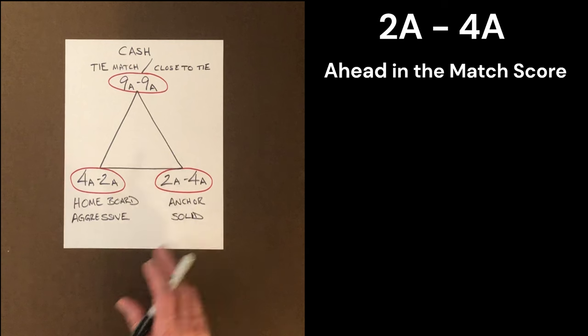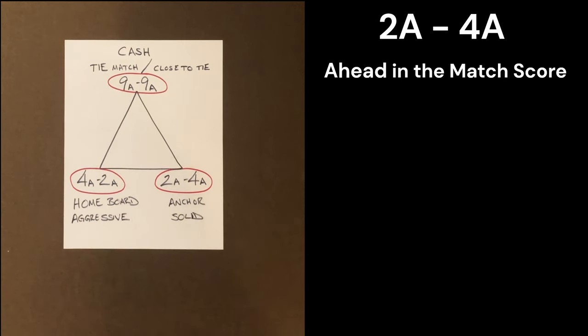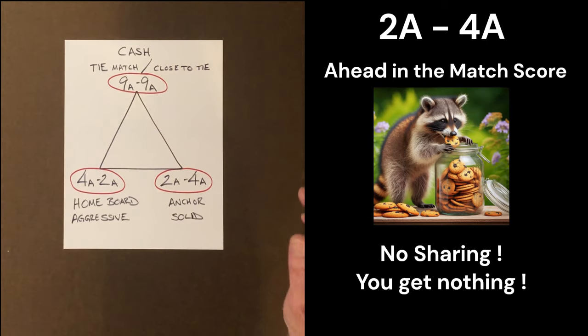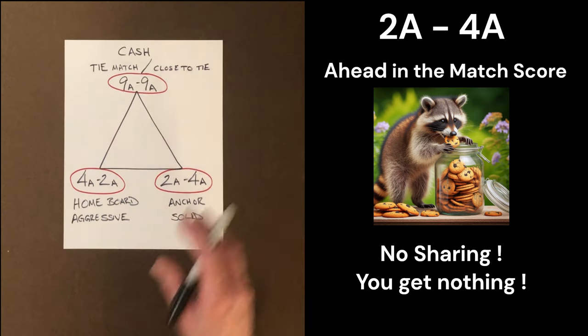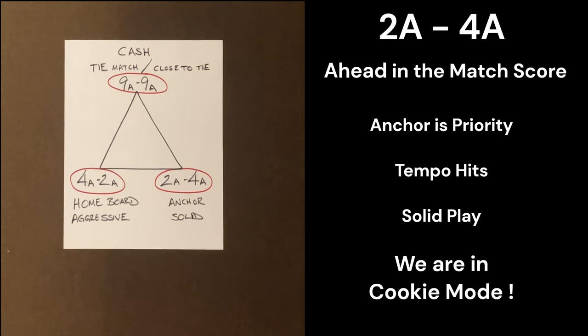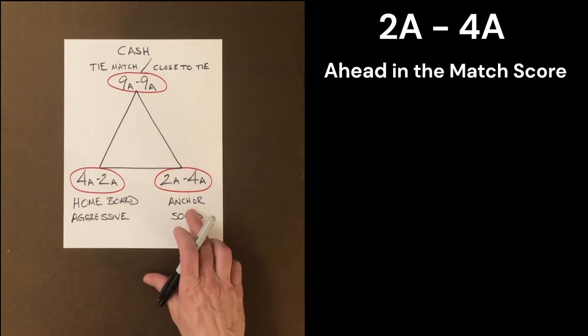Our third match score, 2 away 4 away, I call this the stingy match score because we're going to play in a style where our emphasis is going to be an anchor. We're going to play very solid where our opponent wins the fewest gammons against us. At 2 away 4 away, our opponent would love to win a gammon. They would love to have the cube and play and win a gammon against us. And we have to oppose their strategy with our strategy.